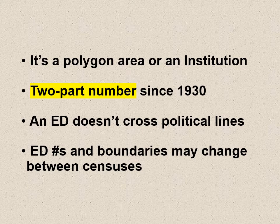An ED is usually a polygon area on the map. It's a two-part number since 1930 — I'm going to emphasize that because beginners often make the mistake of seeing a single number on a map and not realizing it's incomplete. An ED doesn't cross political lines; it will not straddle a city line, town line, or ward line. And you should know that ED numbers and boundaries in an area may change between censuses. You can't use the 1940 ED number for people who lived in the same house in 1950.